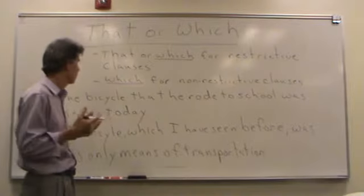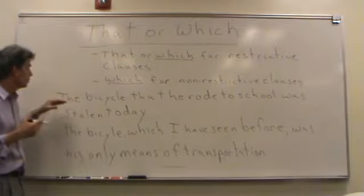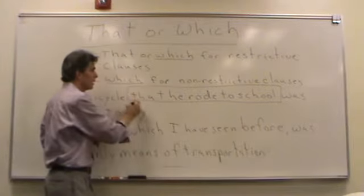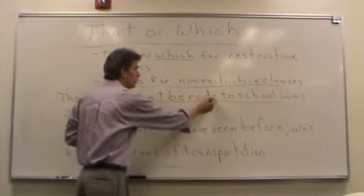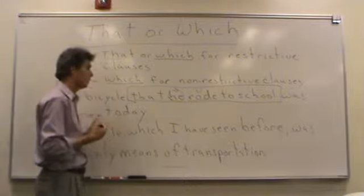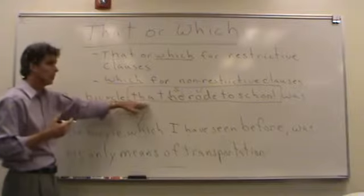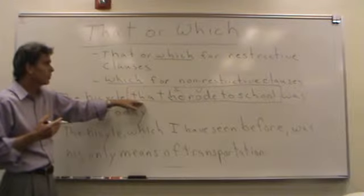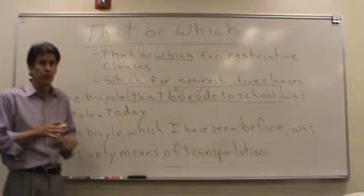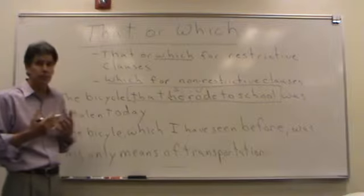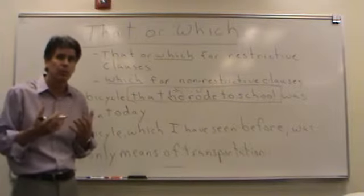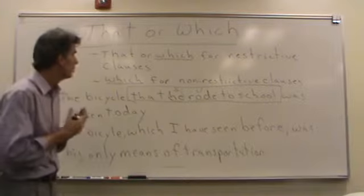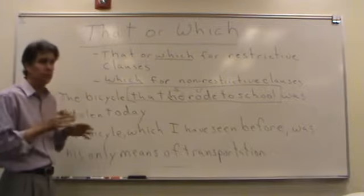Let me show you a couple of examples. 'The bicycle that he rode to school was stolen today.' The relative clause is 'that he rode to school.' Notice it has a subject — 'he' — and a verb — 'rode' — so it is a clause. The sentence could make sense without it: 'The bicycle was stolen today.' But 'that he rode to school' identifies the bicycle and tells you something essential about the meaning of the sentence.